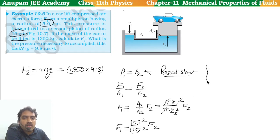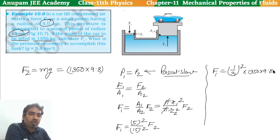Here we need to convert it to meters, but it will cancel out, so no need to convert. This F1 equals, ultimately we will get 1 by 3 whole squared. This 5 will cancel out, 15 will cancel out by 5, 3 times. So 1 by 3 whole squared, and it is 1350 into 9.8.